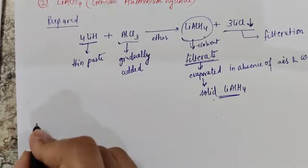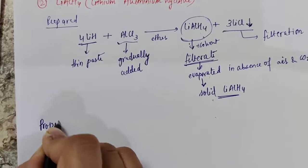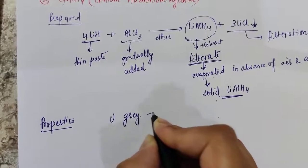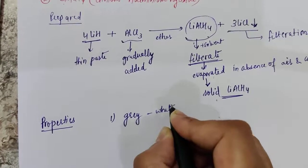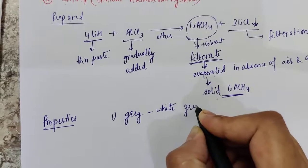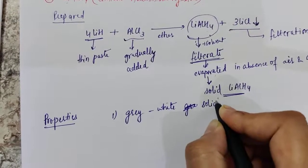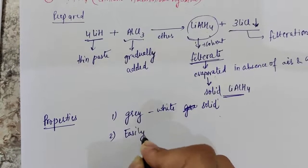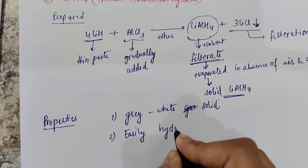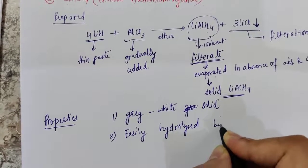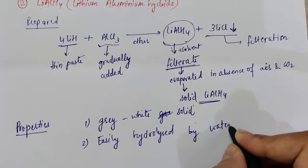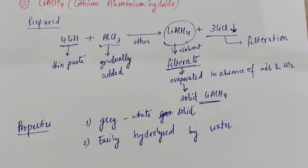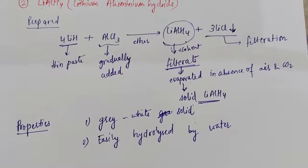Talking about the properties: lithium aluminium hydride is a gray-white solid. It can be very easily hydrolyzed by water, and on hydrolysis it produces hydrogen gas.